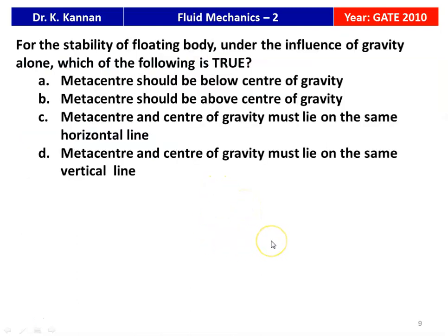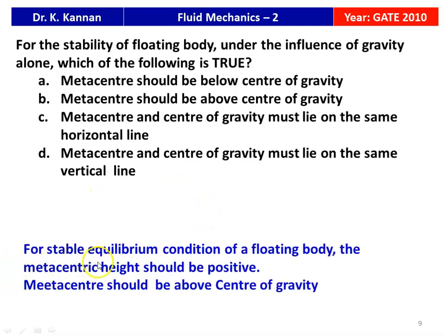The next question from the 2010 Gate Question Paper: 'For stability of a floating body under the influence of gravity alone, which of the following statements is true?' Options: metacentre should be below the centre of gravity; metacentre should be above the centre of gravity; metacentre and centre of gravity must lie in the same horizontal line; metacentre and centre of gravity must lie in the same vertical line. For stable equilibrium, the metacentric height should be positive, meaning metacentre should be above the centre of gravity. The answer is option B.